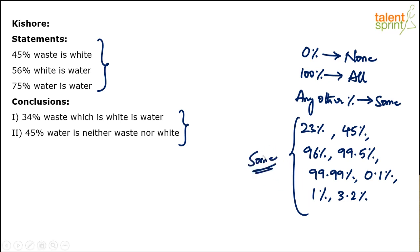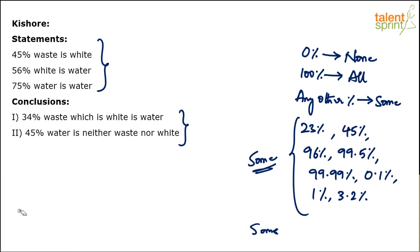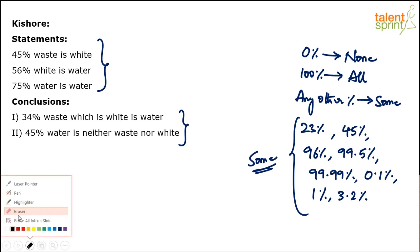If you go back to the syllogisms video, I told you that 'some' can be anything between 1 and 100 in absolute numbers. The key point is that 'some' is between none and all. So if you convert that logic to percentages, it can be anything between 0% and 100%.